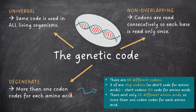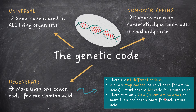To explain degeneracy: there are 64 different codons, three of which are stop codons, so don't code for any amino acids. Note that start codons do code for amino acids, so overall we have 61 codons which do code for amino acids. However, there are only 20 different amino acids, and therefore each amino acid must have more than one codon which codes for it.